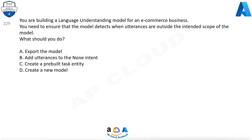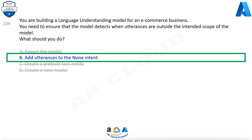You are building a language understanding model for an e-commerce business. You need to ensure that the model detects when utterances are outside the intended scope of the model. What should you do? A. Export the model. B. Add utterances to the none intent. C. Create a pre-built task entity. D. Create a new model. The correct answer is B. Add utterances to the none intent.